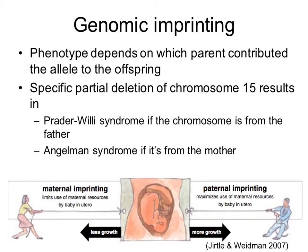Genomic imprinting is similar to epigenetics because it involves a tag added to the genes that affects which genes get expressed, without modifying the DNA sequence itself. What is interesting is that imprinting depends on which parent does the imprinting. There is maternal imprinting that silences certain genes and paternal imprinting that silences other genes — maternal imprinting adds epigenetic marks to the egg, and paternal imprinting adds epigenetic marks to the sperm. Genes silenced on the father's side must be expressed from the mother's copy, and vice versa.